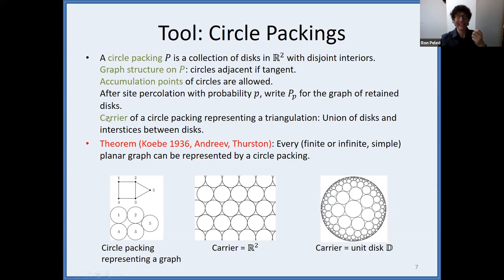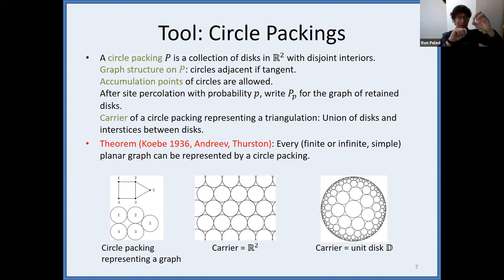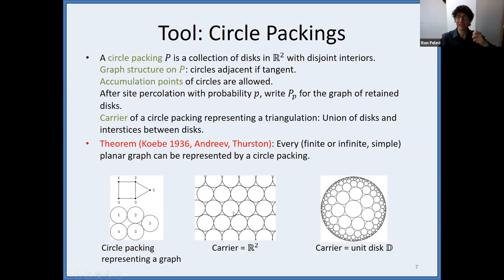One definition: the carrier. When you have a circle packing representing a triangulation, the union of the disks and the little spaces between three adjacent disks (the interstice of each triangle) is called the carrier of the circle packing. Below you see two examples: one is a circle packing representing the triangular lattice, whose carrier is all of R^2; and another has the carrier being the unit disk, with the entire boundary being accumulation points of circles.